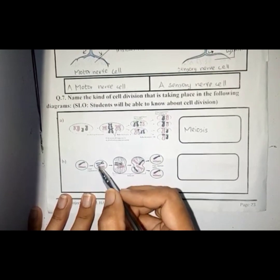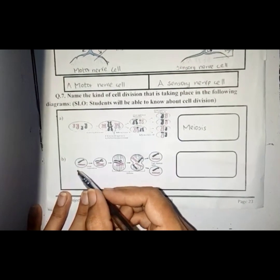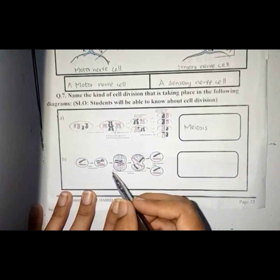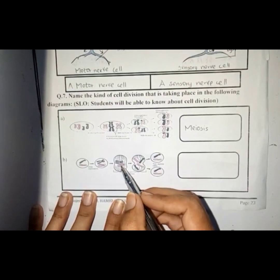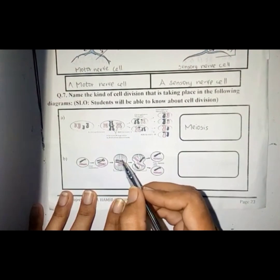In interphase, the chromosomes will become visible, thick, and short, and they will also get replicated. So students, here we have the replication of the two chromosomes which were present in the parent cell, and after that these replicated chromosomes attach themselves in the middle of the cell.